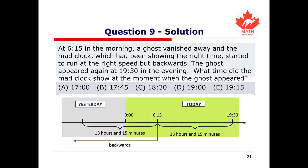Since the ghost appeared first at 6:15 and then at 19:30, the clock ran backwards for 19 hours 30 minutes minus 6 hours 15 minutes, which is 13 hours and 15 minutes. The mad clock was showing the right time at 6:15, then went backwards for 13 hours 15 minutes. We are currently 6 hours 15 minutes past midnight, so we need to go another 7 hours backwards from midnight. 24 hours minus 7 hours is 17 hours, which is option A.